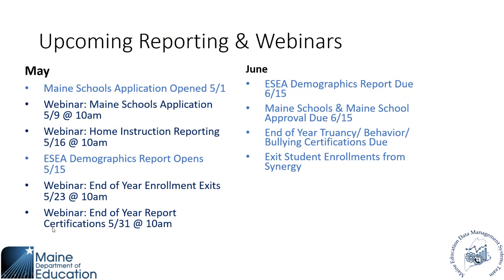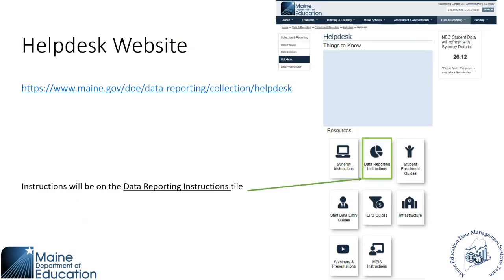Feel free to join us with the live links. Those links can be found in the newsroom and also in the newsletters that are going out monthly. If you have not subscribed to that, please feel free to sign up on the website. Here is the help desk website — this is where you can find your reporting resources. This presentation will be posted alongside the webinar recording. On the main page we have our data reporting instructions tile, and that will be where you can find the report instructions for the ESEA demographics report.